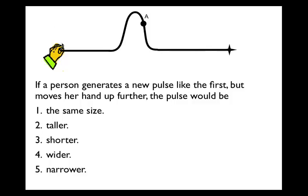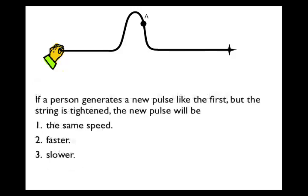Apologies for the coffee maker gurgling in the background. If a person generates a new pulse like the first but the string is tightened, what will the new pulse do? If you increase the tension in the string, this makes a new pulse travel faster down the string. So the correct answer here is number 2.